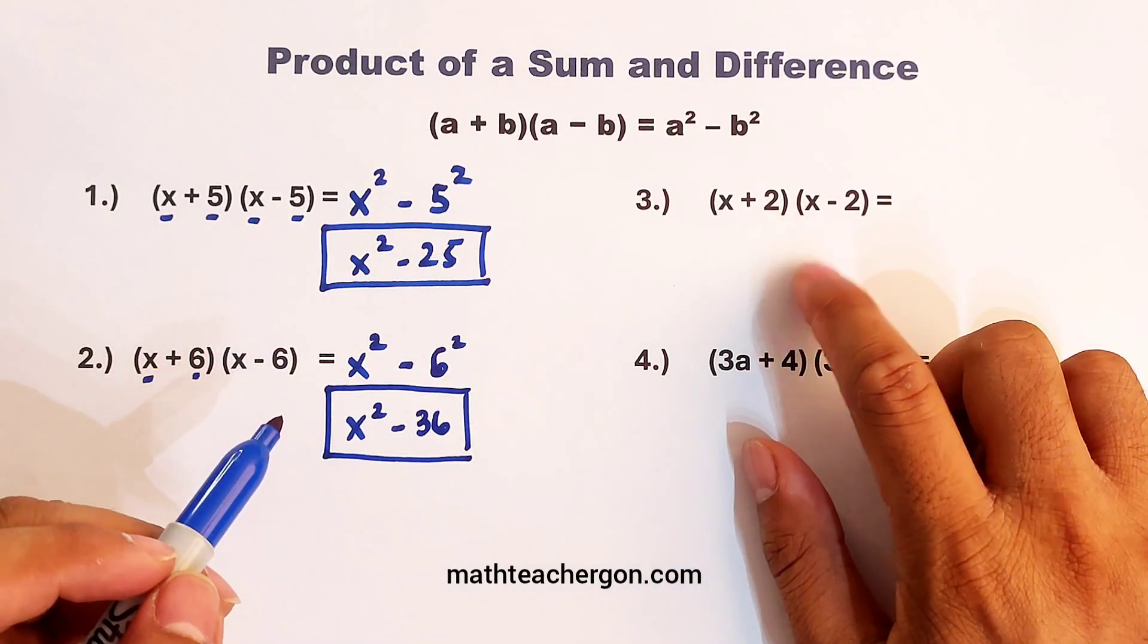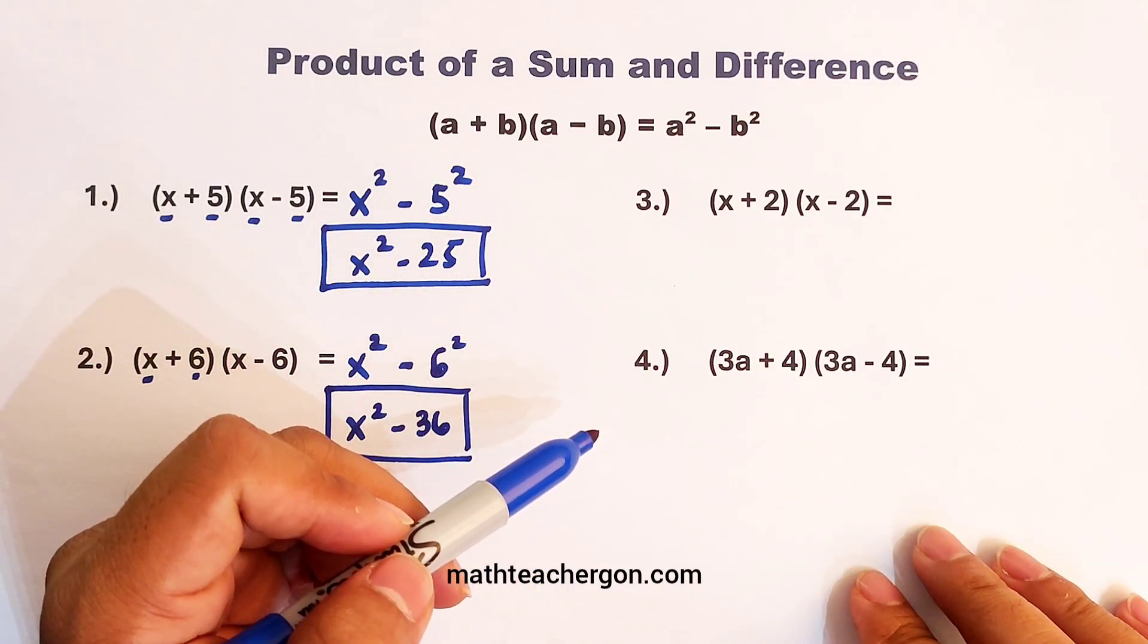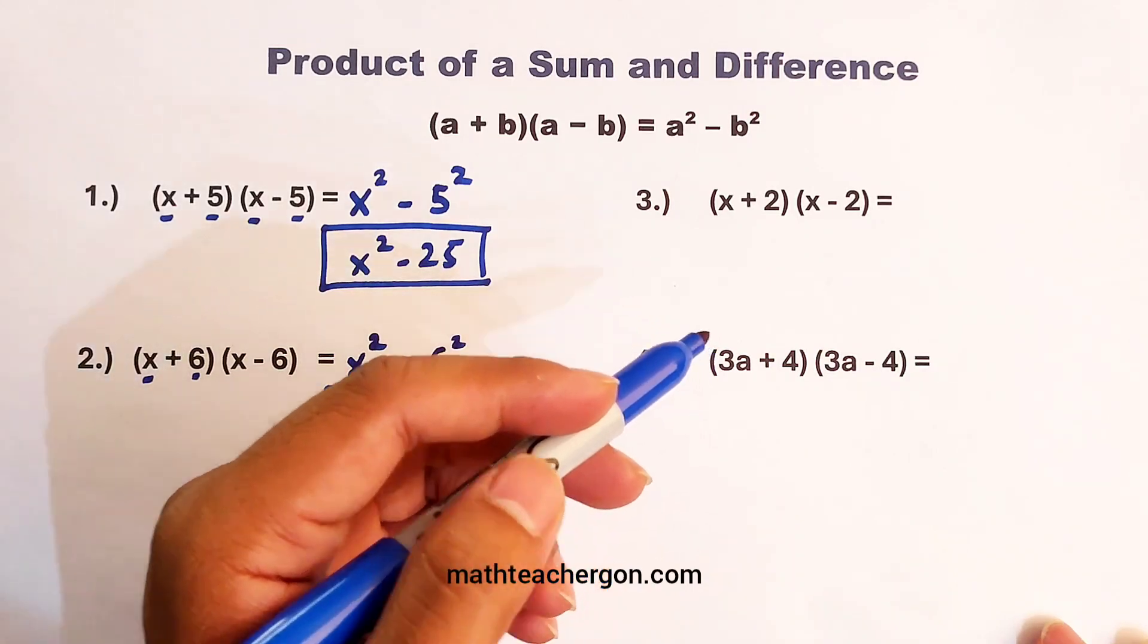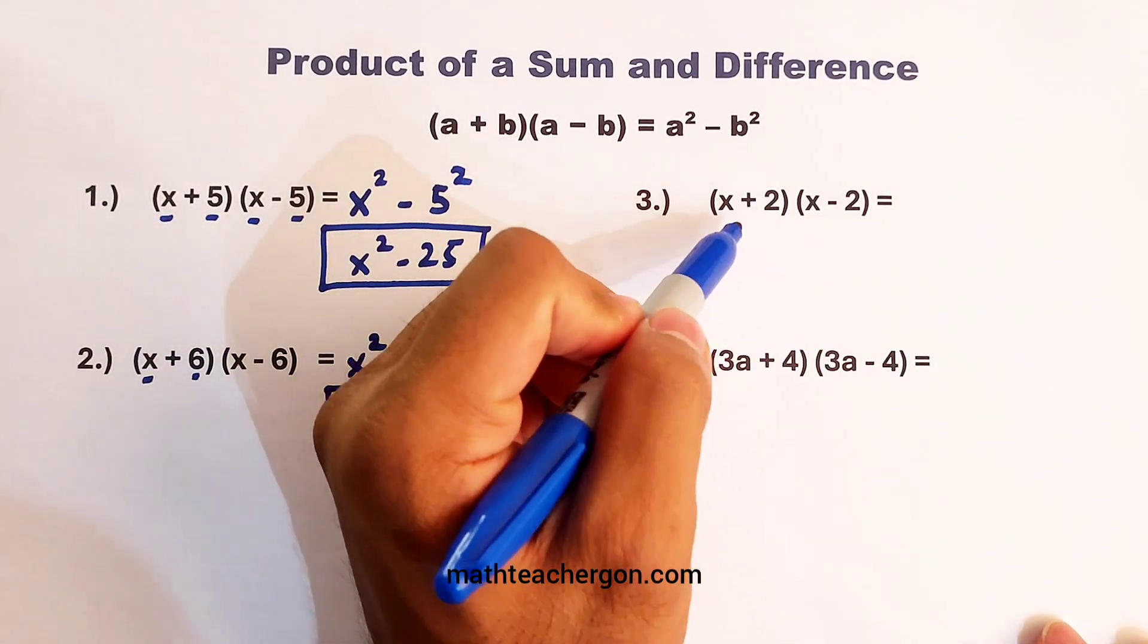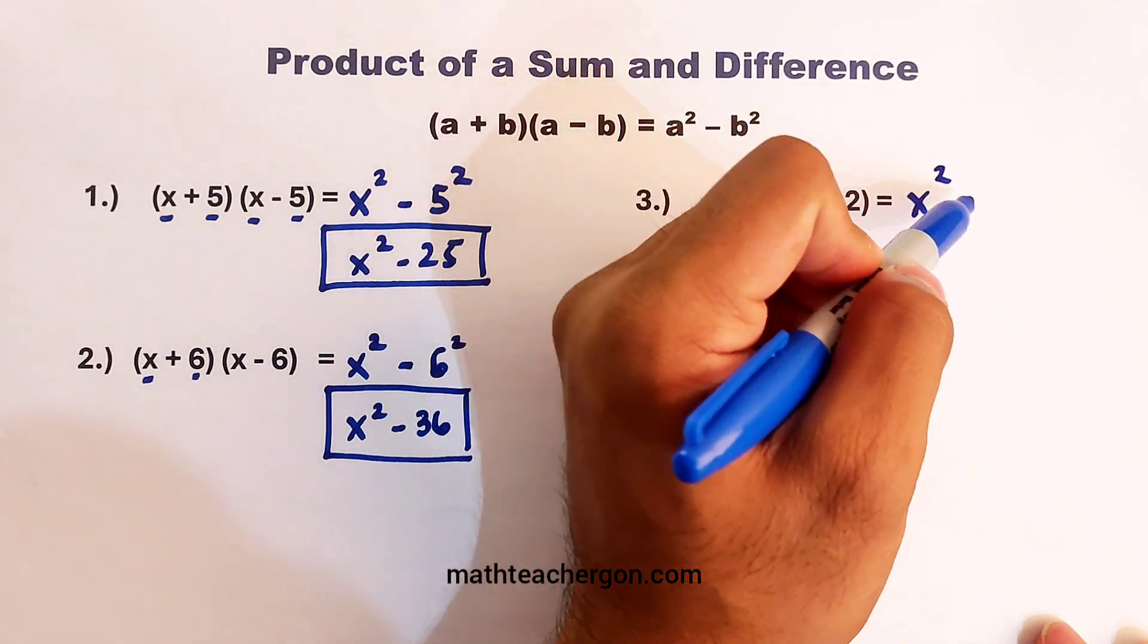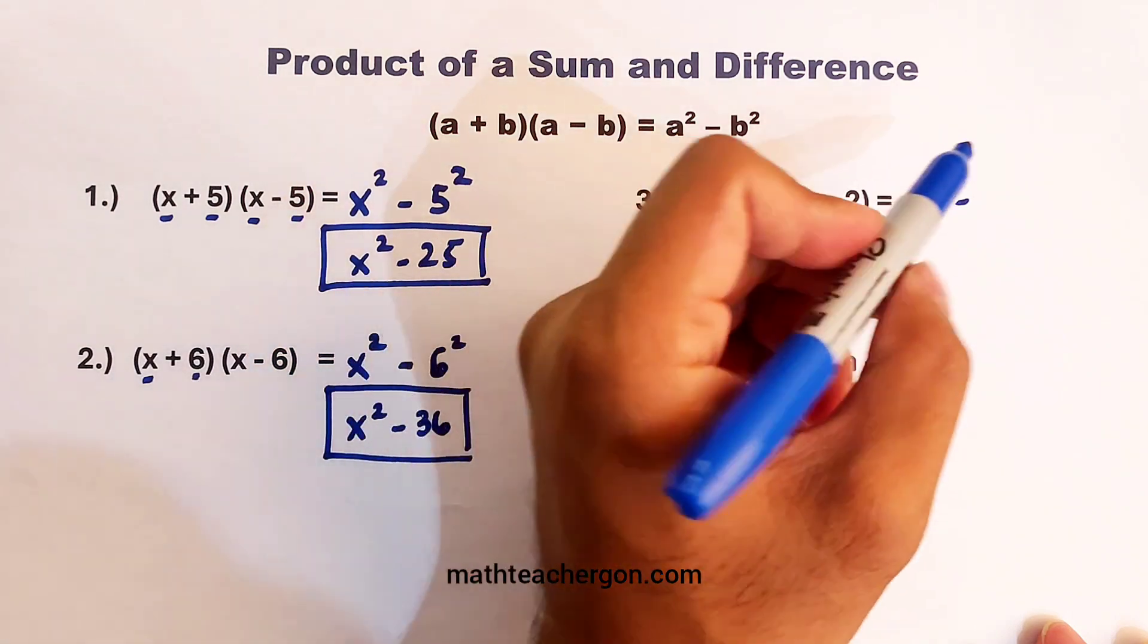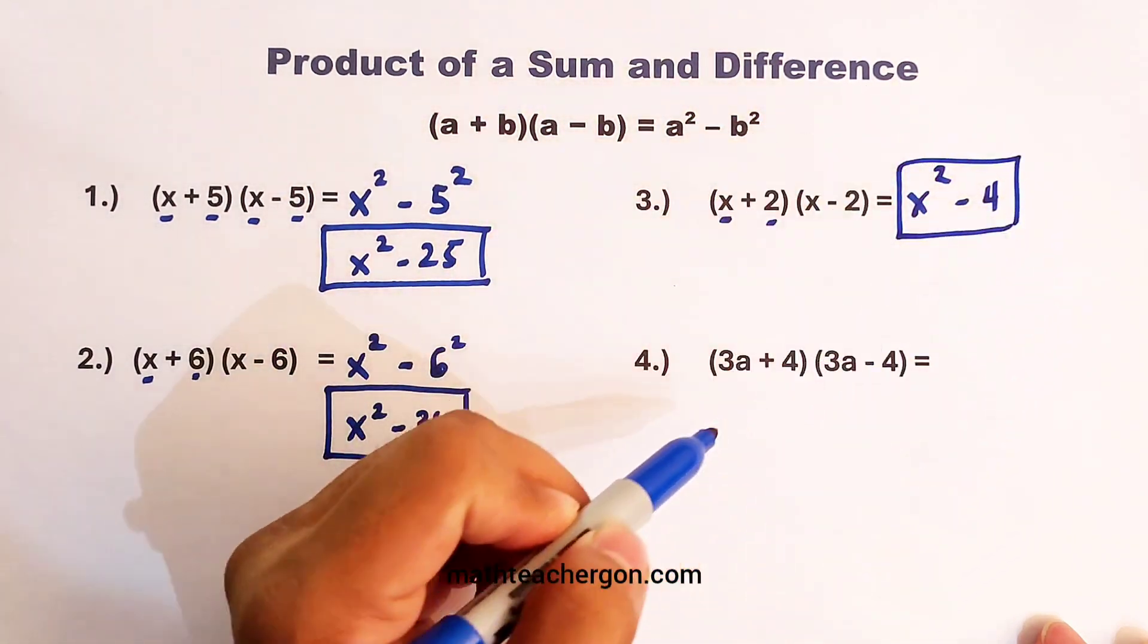So you can pause the video for a while and you can try item number three. Now let's continue. But this time, we will go directly. We have x plus 2 times x minus 2. Square the first term. That is x squared. Minus, square the last term. 2 squared is equal to 4. And as simple as that, we have our product.